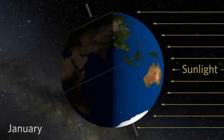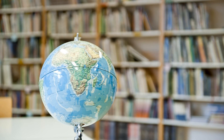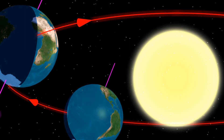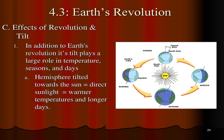When the Earth is at the point in its orbit where a hemisphere is tilted towards the sun, that hemisphere experiences summer. The direct sunlight and longer days during this time lead to warmer temperatures and the flourishing of plant life. On the other hand, when a hemisphere is tilted away from the sun, it experiences winter, characterized by shorter days, less direct sunlight, and colder temperatures. The Earth's revolution around the sun, combined with its axial tilt, is what brings about the remarkable seasonal transitions we witness throughout the year.